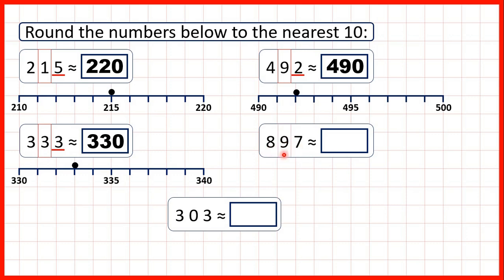Now, 897. We circle our tens digit and underline our ones. Remember, if it's 5 or more we round up, and we have a 7, so we're rounding up. That usually means the tens digit increases by 1, but we already have a 9 in our tens, and we can't write 10 in a single place value. So we look to the left and take our hundreds and tens digits together — 1 more than 89 is 90, so those digits change to a 9 and a 0, and our ones digit turns to a 0, giving us 900.